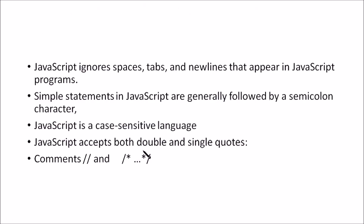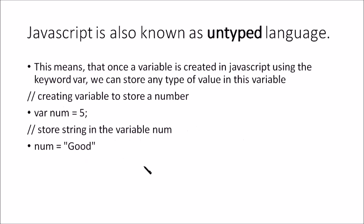JavaScript ignores spaces, tabs, and new lines that appear in the program. Each JavaScript statement must be ended by a semicolon character. Moreover, it is a case-sensitive language, and JavaScript accepts both double and single quotes for strings. Comments can be written as single-line or multi-line comments, just like in C. A peculiarity of JavaScript is that it is an untyped language — once a variable is created using the keyword 'var', we can store any type of value in that variable.